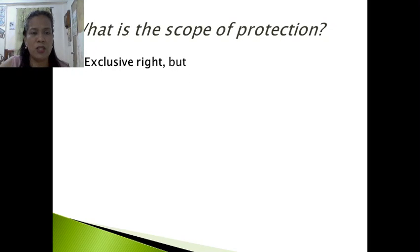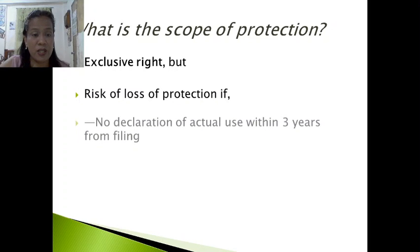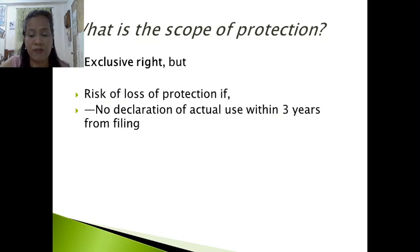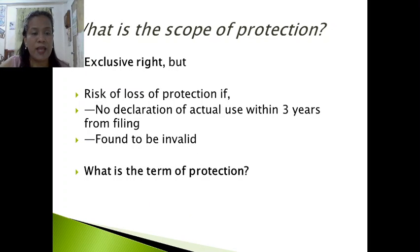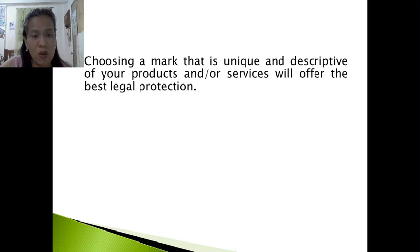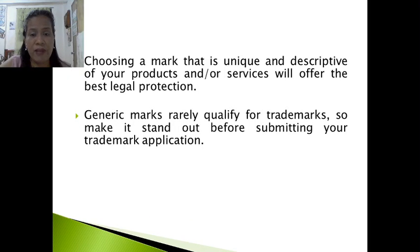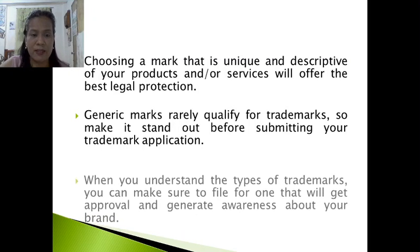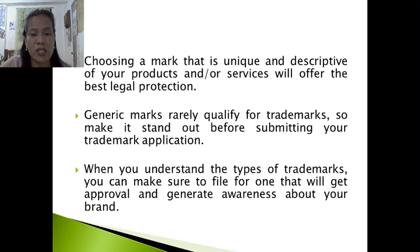The scope of protection gives the owner an exclusive right, but protection is lost if no declaration of actual use is made within three years from filing, and the mark may be found invalid. The term of protection is potentially perpetual, with renewal required every 10 years. Choosing a mark that is unique and descriptive of your products or services offers the best legal protection. Generic marks rarely qualify, so make your mark stand out before submitting your trademark application. When you understand the types of trademarks, you can file for one that will get approval and generate awareness about your brand.